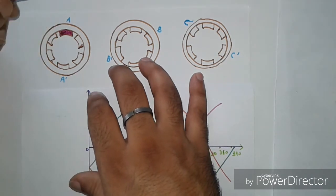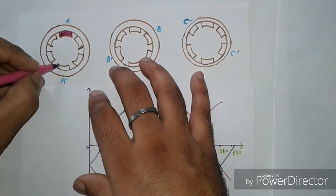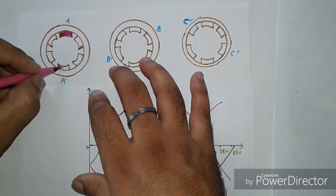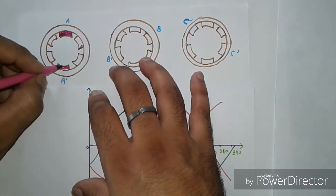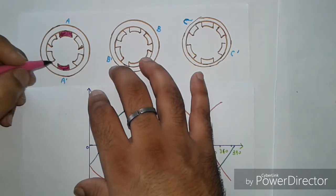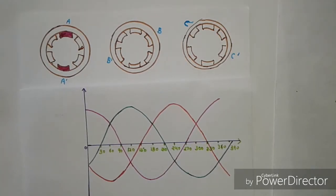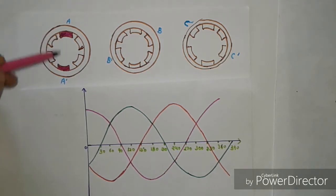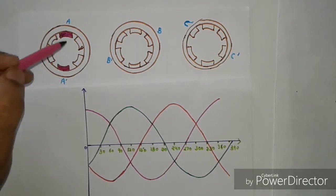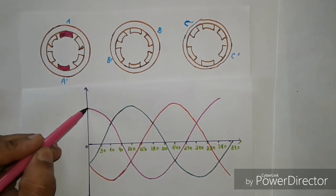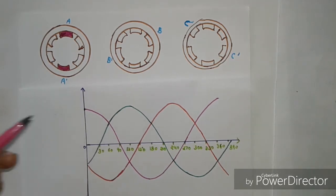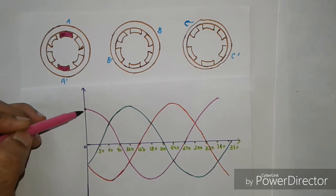The maximum value is drawn in the field called A–A dash. At this stage, the strength of the field is also maximum — this is the position where the field gets its maximum value.